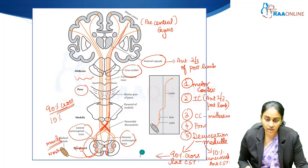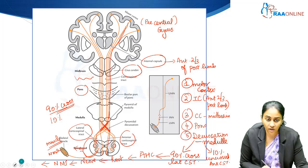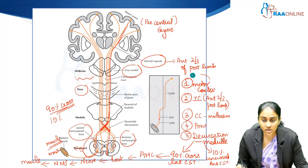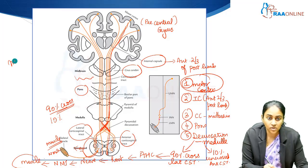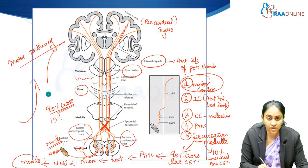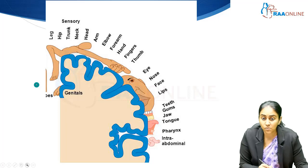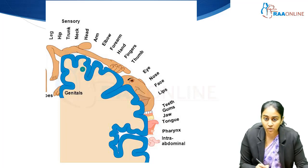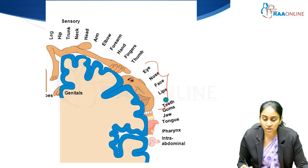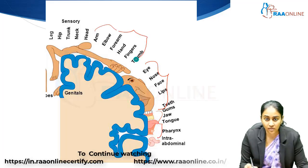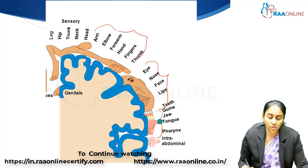From the spinal cord, you have the anterior horn cells, which give rise to the motor root, which gives rise to the nerve. The motor output is then communicated to the neuromuscular junction, which finally innervates the muscle — that is how the orders are carried from the motor cortex all the way to the muscle. In the same way, there is a sensory pathway which happens in the reverse direction — from the sensory receptors all the way to the sensory cortex situated in the postcentral gyrus. This is the sensory homunculus, which is closely similar to the motor homunculus, with a large area subserving the face, mouth, and tongue, followed by the hand and thumb, and a minimal portion for the trunk and lower limb.